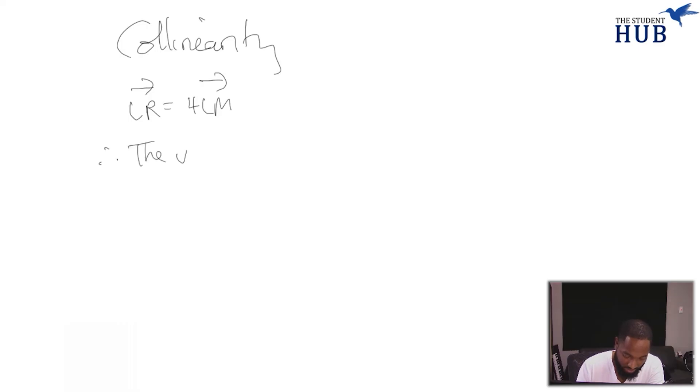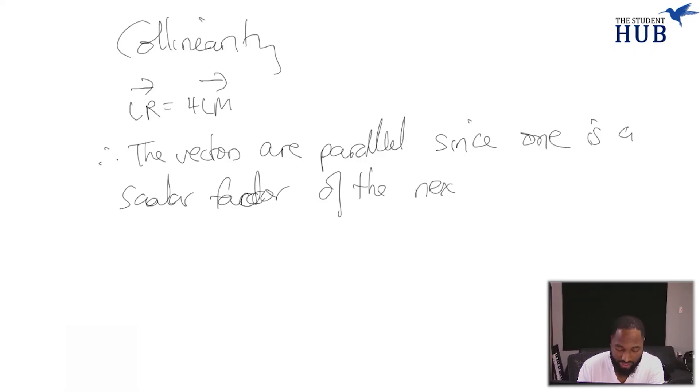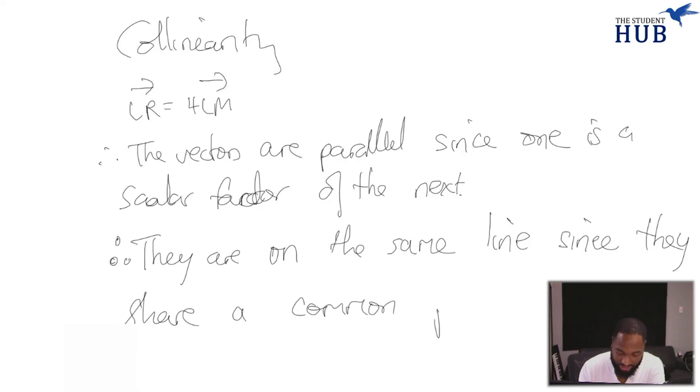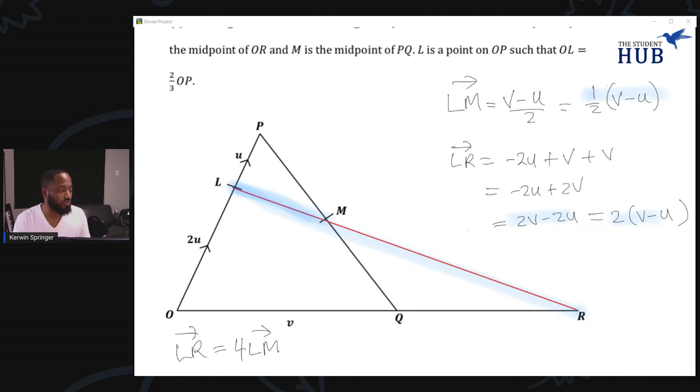To prove that they're collinear, you need to show that LR is equal to 4LM. Therefore the vectors are parallel since one is a scalar of the next, or you can say related by a scalar factor of four, or you can say LM is a scalar multiple of LR, however you want to phrase it. And then the next thing: they are on the same line which means collinear since they share a common point. This is the next thing you need to state to get the next piece of the mark. So if two things are parallel to each other and one of the points is common, it means that they must be on the same line because they share the same point and are parallel. That's how you prove collinearity for CSEC. Four marks, so you're good to go, hundred percent.